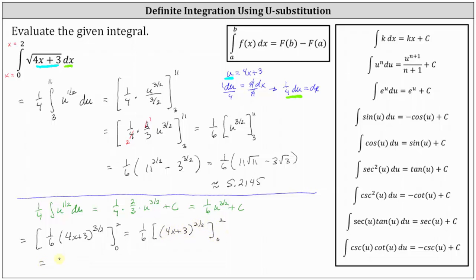We would have one-sixth times the difference of big F of 2 and big F of 0. We'll notice big F of 2 is the quantity 4 times 2 plus 3, which is 11, raised to the three-halves power. And then minus big F of 0 is the quantity 4 times 0 plus 3, giving us 3 to the three-halves. And of course, we get the same result.